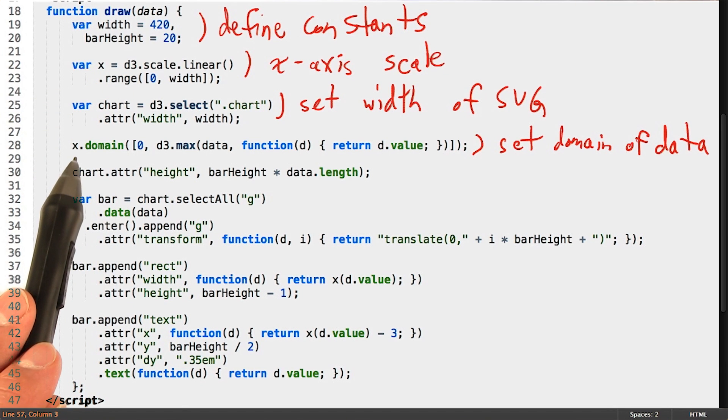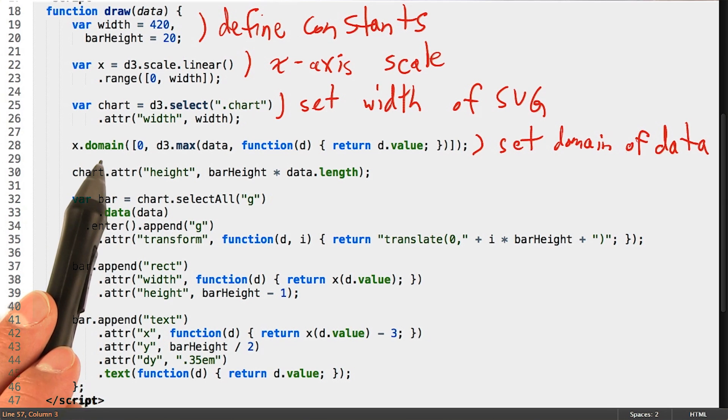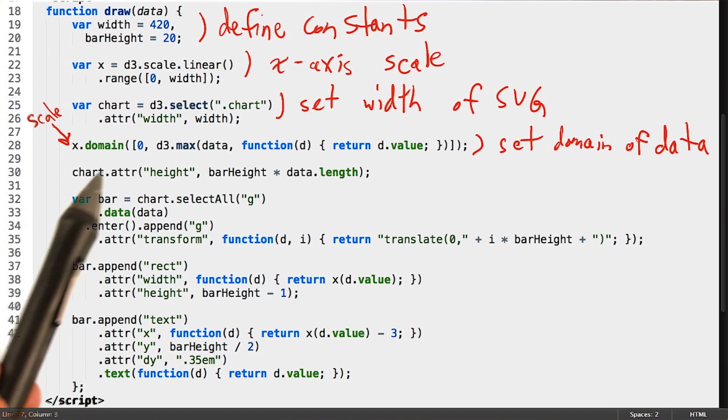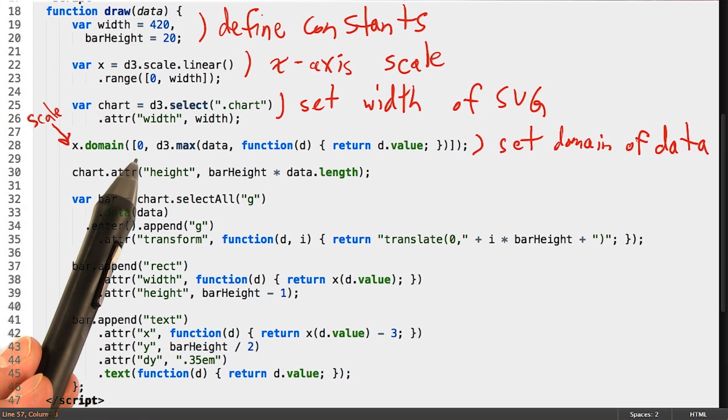The domain of our data represents the min and max of our data values. We can see here that we simply hard code a value of 0 as the minimum of our domain.